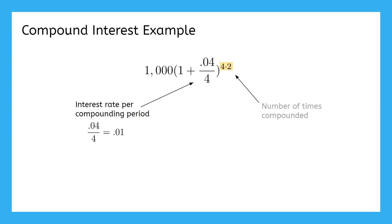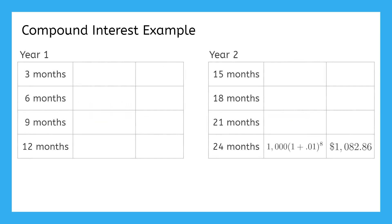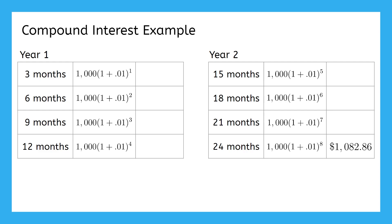And the exponent represents the number of times the interest has compounded. If it compounds four times per year and we leave it for two years, it'll compound a total of eight times. We don't have to skip straight to the end, though. We can actually track the total amount every time it compounds. All we have to do is change the exponent to how many times it would have compounded at that point.